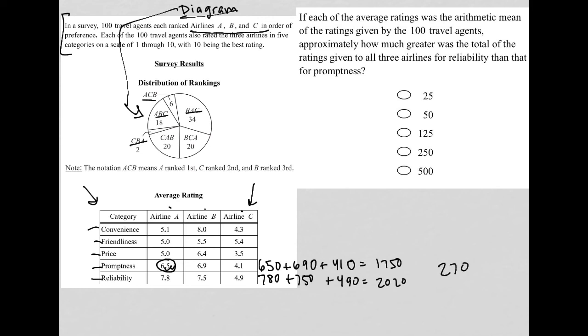that'll be 270. Now, I don't see 270 on my list here, but the question does say approximately how much greater was the total of the ratings given to all three airlines for reliability than for promptness. So since it says approximately, I'm going to say that my correct answer here is 250.